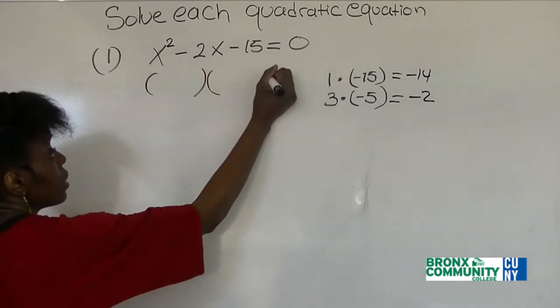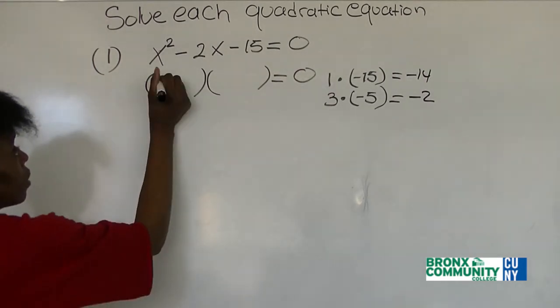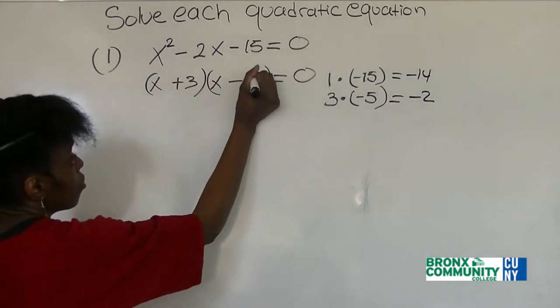So what do we do? We write two parentheses, set it equal to zero. Now, x, x, we have plus 3 and negative 5.